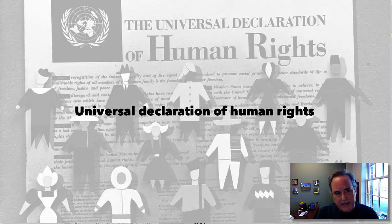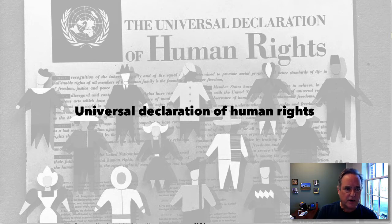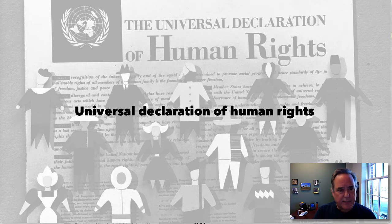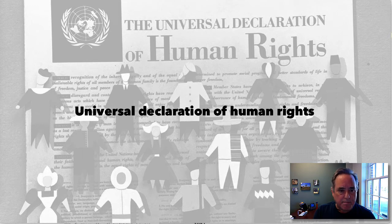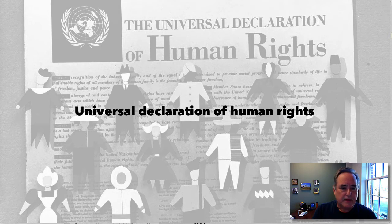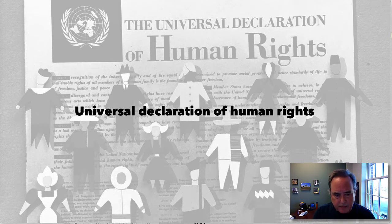A key component in modifications to international law following World War II was the Universal Declaration of Human Rights. This was a resolution adopted by the United Nations meant to define the meaning of the words 'fundamental freedoms' and 'human rights' as they appeared in the United Nations Charter, which binds all member states. For this reason, the Universal Declaration of Human Rights is a fundamental, constitutive document of the United Nations. Many international lawyers believe the Declaration forms part of customary international law and is a powerful tool to apply diplomatic and moral pressure to governments that violate any of its articles.